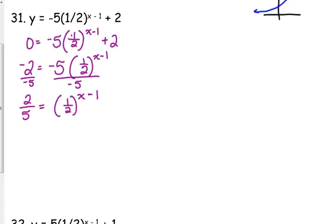Change it to log form. The variable is stuck in the exponent. The only way to get it out of that exponent is to put it in log form. We can't take the log of a negative number. So if we had divided and that 2 over 5 had not become positive, then we would have been stuck. That would be an example of one that does not have an x-intercept.